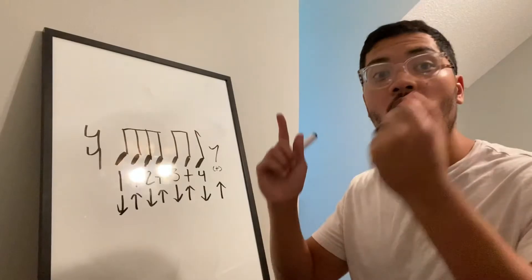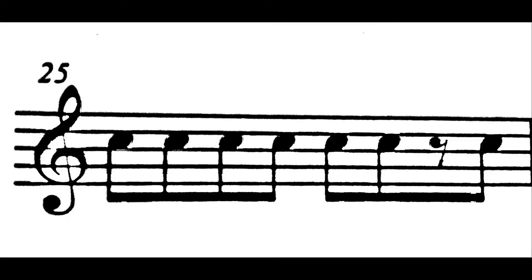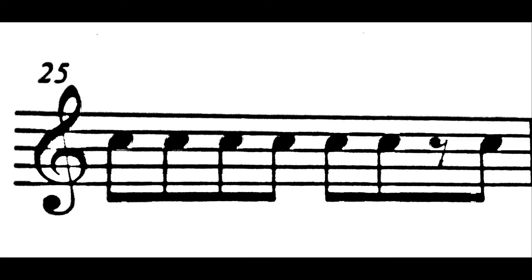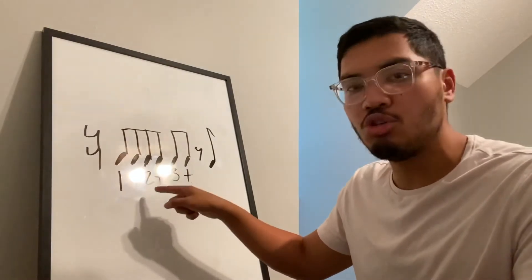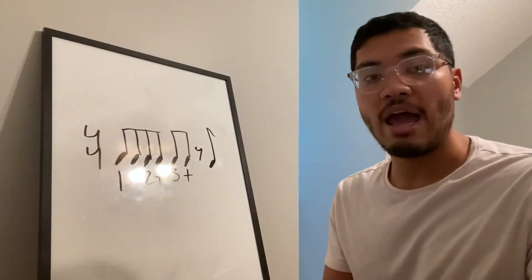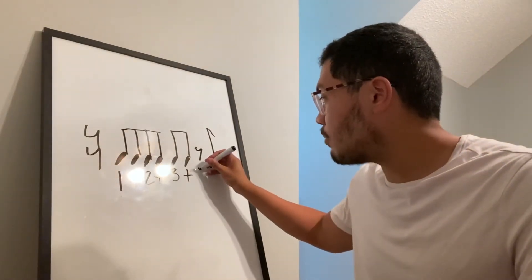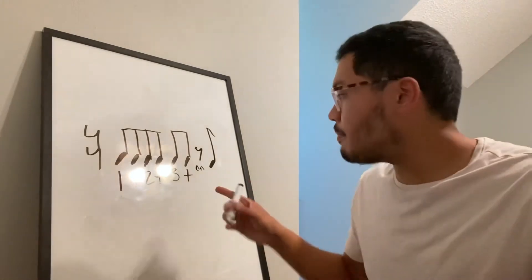Now let's take a look at another example: measure 25, where the eighth rest is moved. I've moved the eighth rest over another half beat, and I've moved the eighth note to the other beat. In measure 25 we have our one and two and three and, and when we get to beat four we now have the eighth rest on beat four. So I'm going to make a small four for the rest.